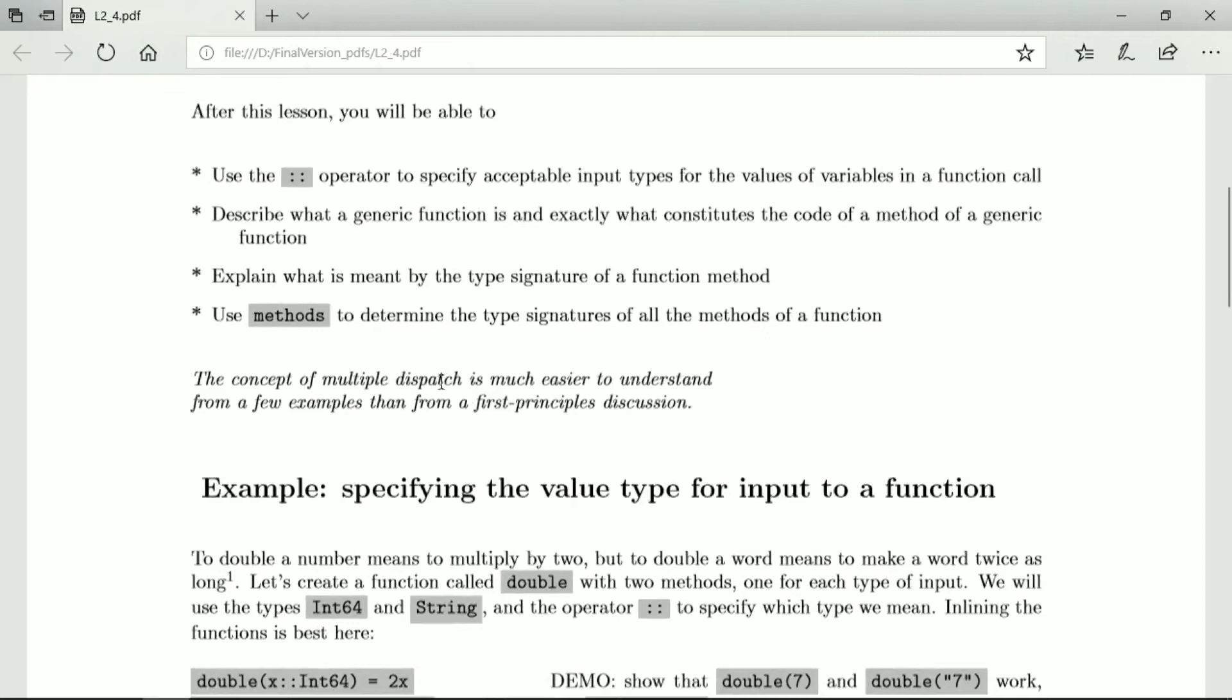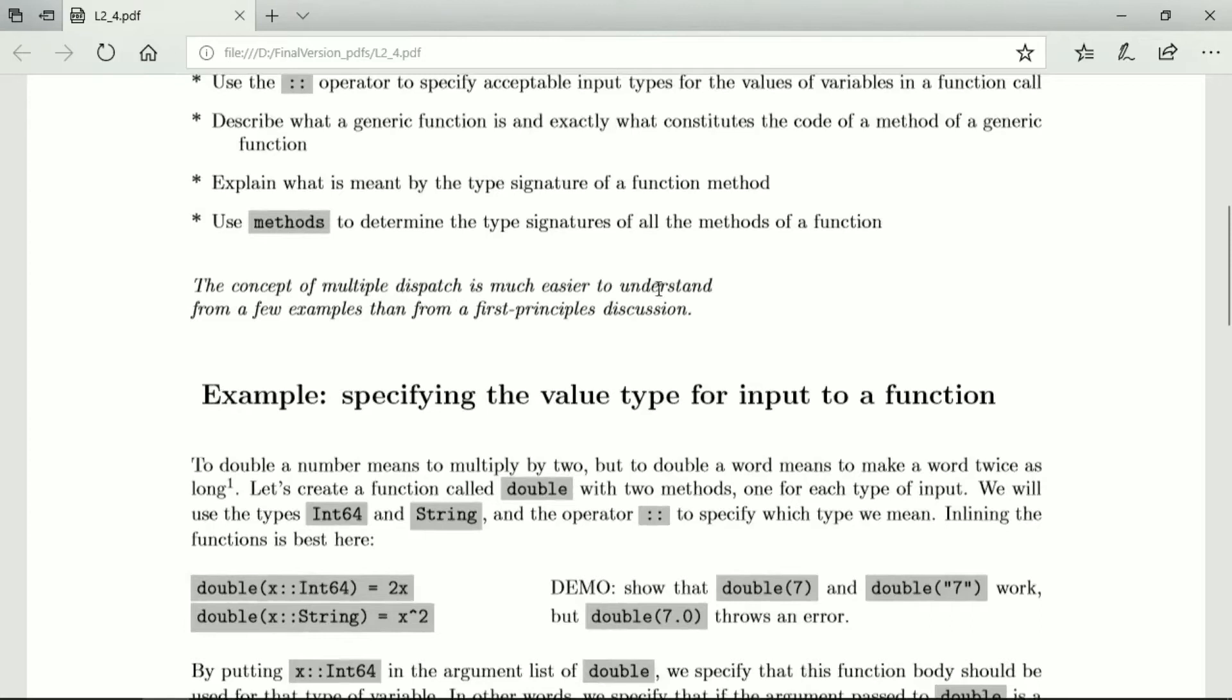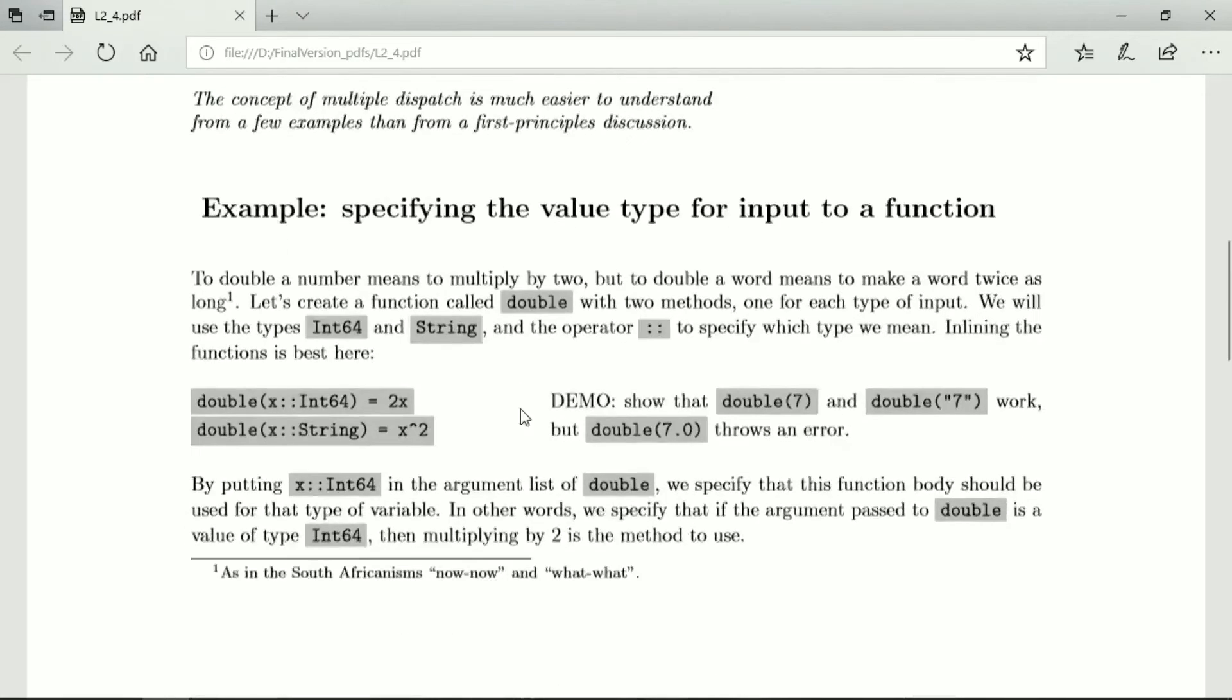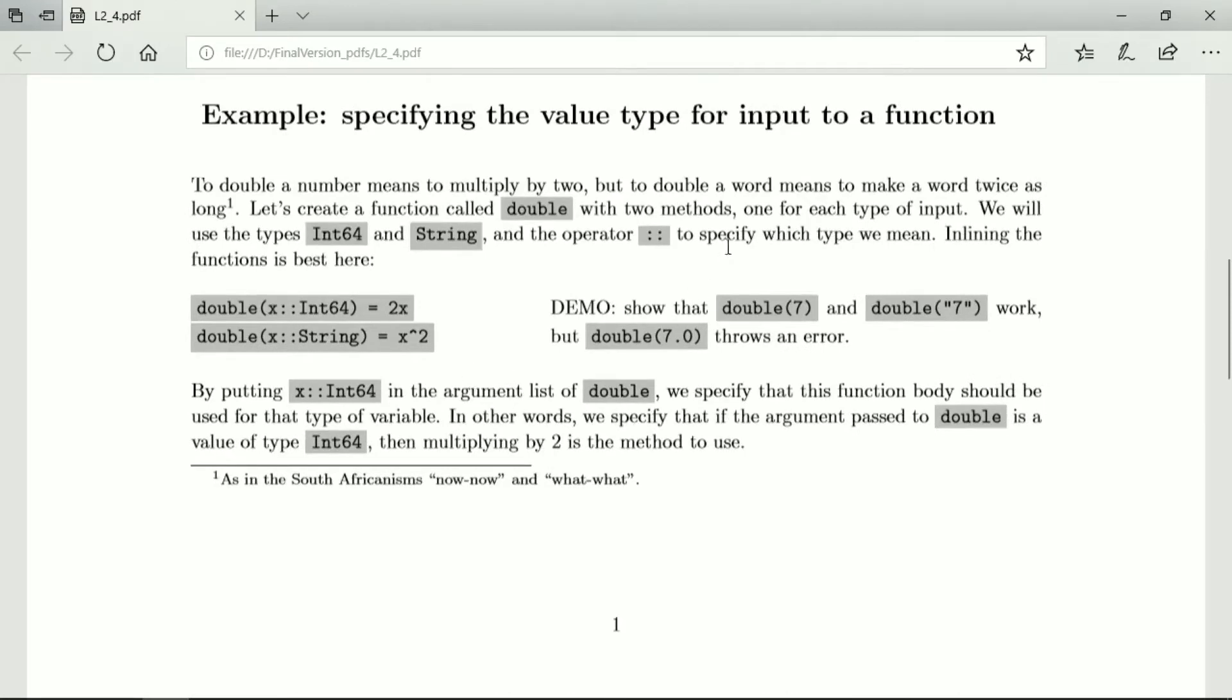It's much easier to understand multiple dispatch from a few examples than from first principles discussion. So let's look at a function for doubling. We want to be able to double numbers, which we multiply by two, and we want to be able to double words, which means we just put them next to each other. So we create a function called double, and it has two methods, one for each type of input. The input types will be int64 and string.